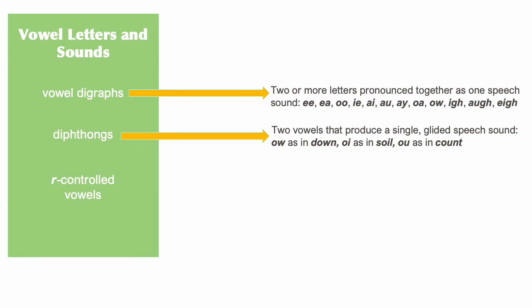Diphthongs are similar to digraphs in that they also just make one sound from two vowels, but their sound is called a glided sound. The sound that the letters OW make in the word bowl is a vowel digraph, but the sound that O and W make in the word down is glided. It's a diphthong.